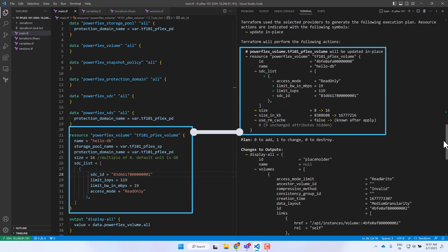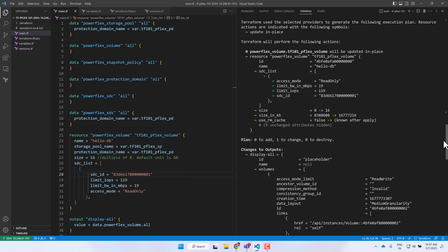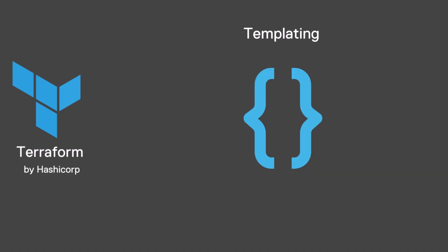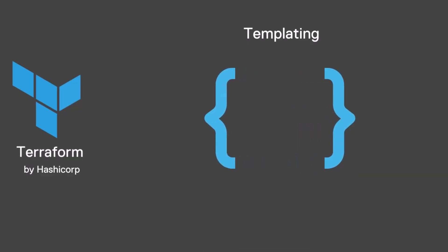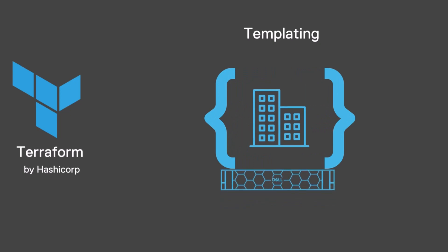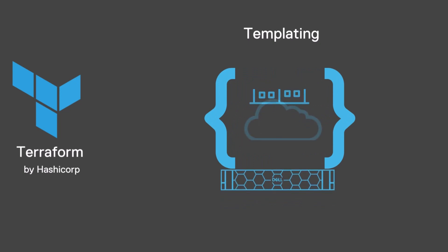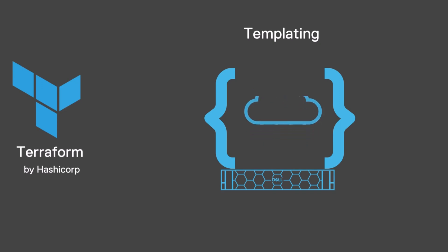This eliminates unwanted drift in the infrastructure configuration. Another useful feature of Terraform is templating. With the help of variables and modules, multiple variants of a template configuration can be deployed on different environments and user profiles in public and hybrid clouds.